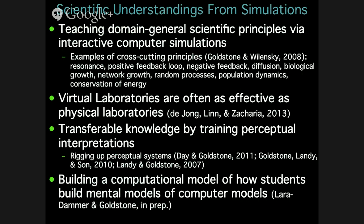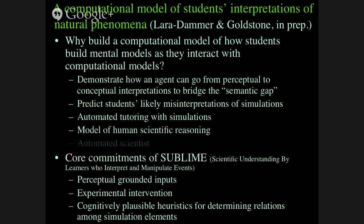Why would you want to do that? One reason is to demonstrate how an agent can cross what Melanie Mitchell has called the semantic gap — on one side you have the perceptual sensory information, and on the other side you have the meaning, the actual conceptual interpretations of what's going on. We want a model of how you go from the perceptual to something humanly interpretable. We're also interested in predicting students' likely misinterpretations of simulations. Oftentimes an expert says the simulation is obvious, but students are systematically misinterpreting it.